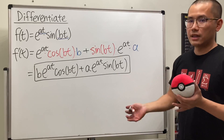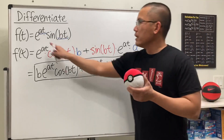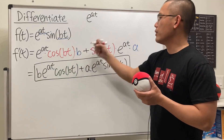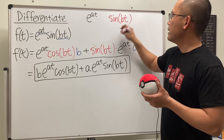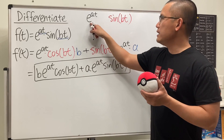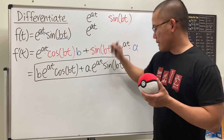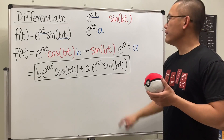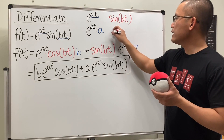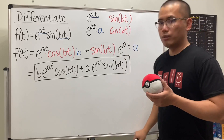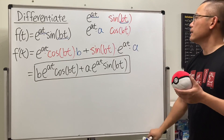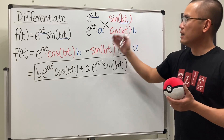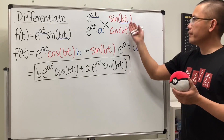Now let's talk about the construction behind all this. The first part of the function is e to the at, and the second part is sine of bt. When we differentiate e to the at we get e to the at, but we multiply by the derivative of the inside, which is a. When we differentiate sine we first get cosine, the input stays the same, and we multiply by the derivative of the inside, b. This is just the product rule: this times that, and that times this.